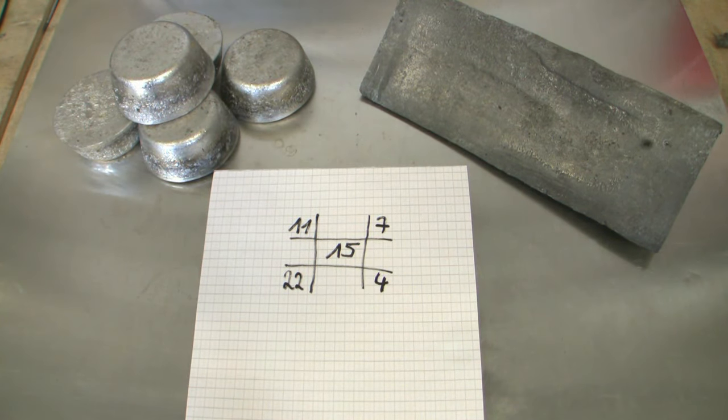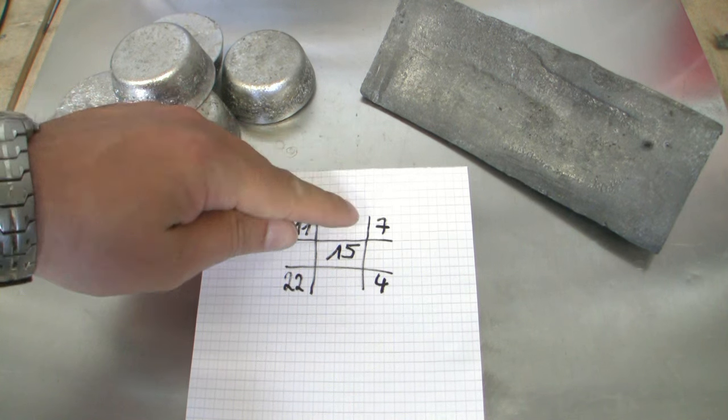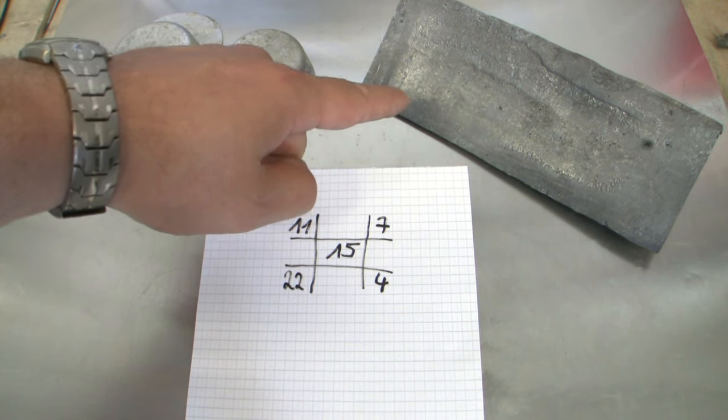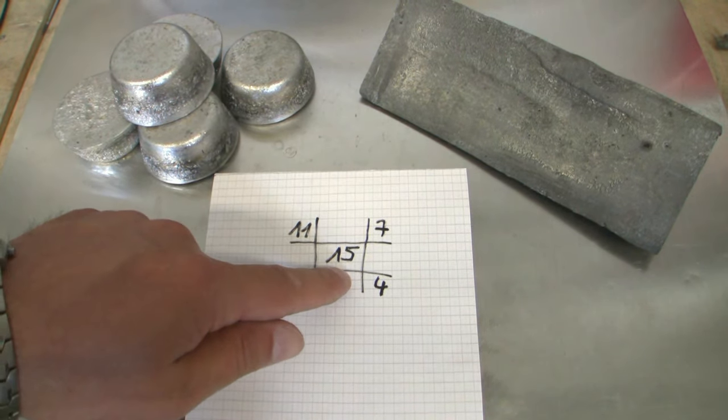And now I know how to blend my lead alloy to reach my goal of Brinell hardness 15: 7 parts from my range lead and 4 parts of my linotype.